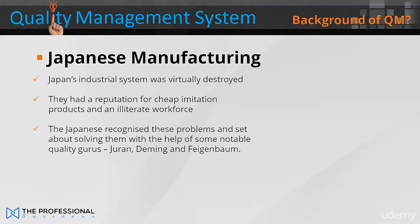At that time, Japan's industrial system was virtually destroyed, and it had a reputation for cheap imitation products and an illiterate workforce. The Japanese recognised these problems and set about solving them with the help of some notable quality gurus — Juran, Deming and Feigenbaum.